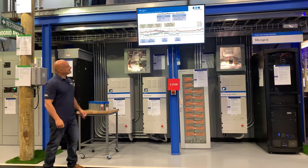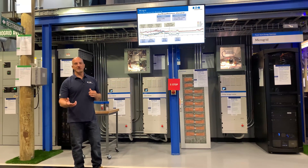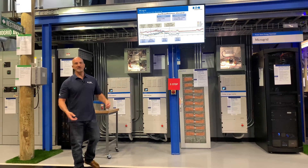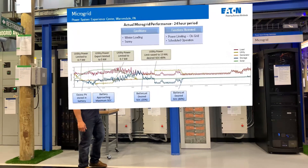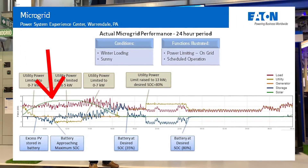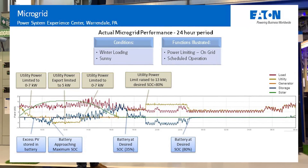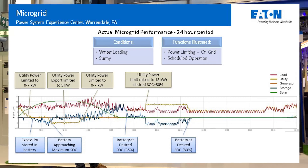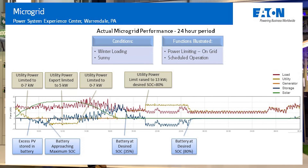Looking at this graphic — unfortunately today we only had about five kilowatts of solar because we're in Pittsburgh, so we don't get a lot of sun. But on a nice sunny day, you see the green line go up in a typical parabolic shape. What we're trying to do is maintain our energy storage level and the utility level at a flat rate.